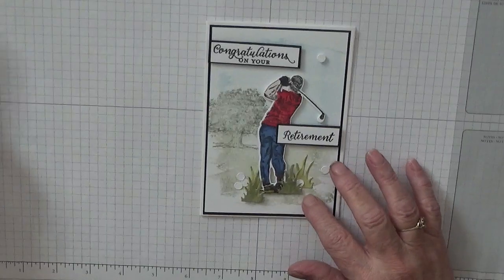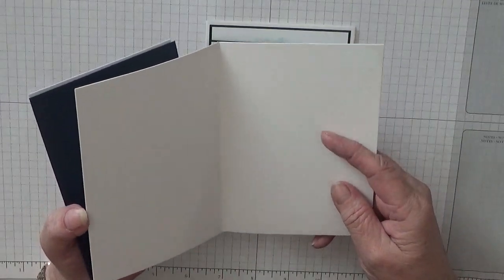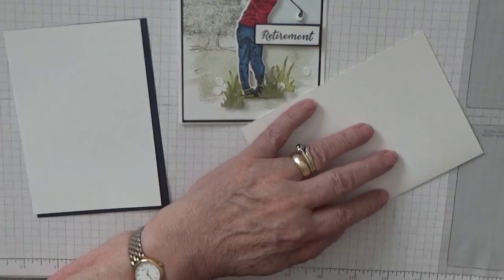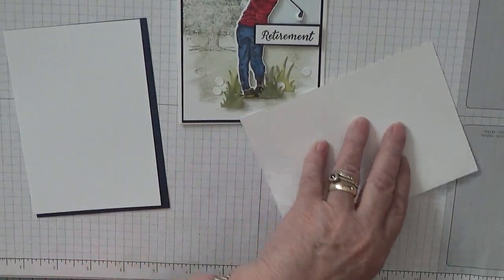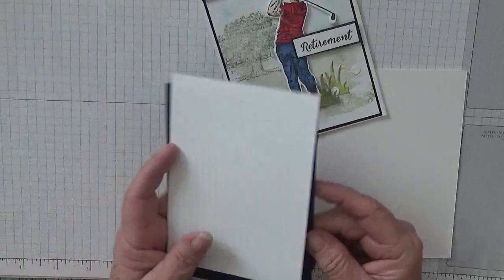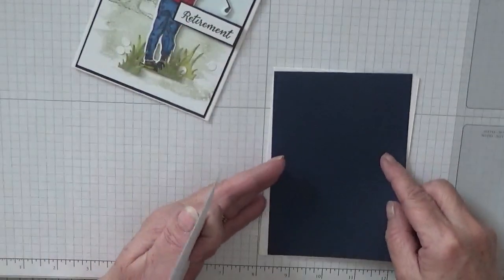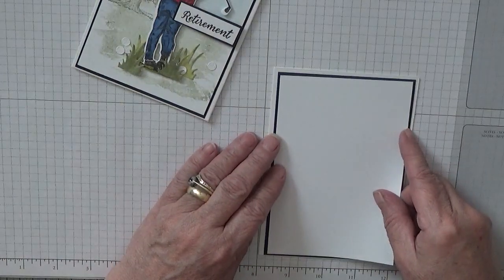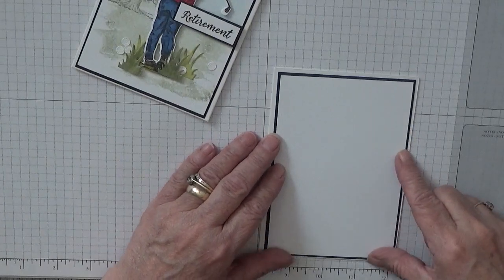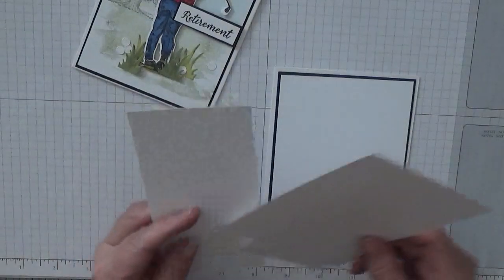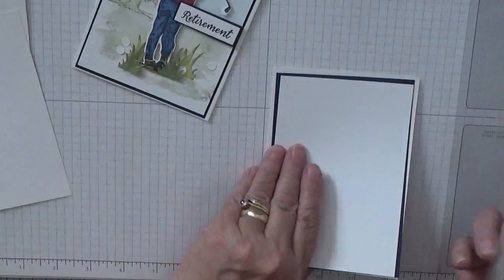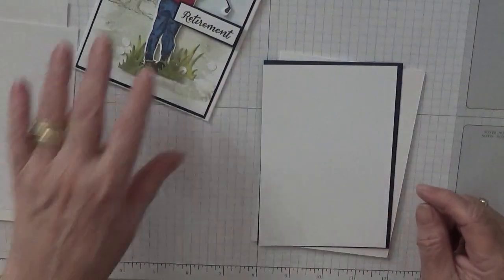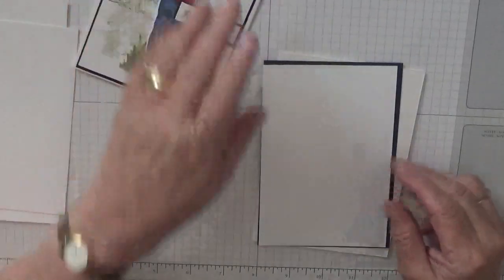For the cardstock I've got a card base of eight and a quarter by five and seven eighths scored at four and one eighths, folded in half. I've got a piece of Night in Navy at five and five eighths by three and seven eighths, and also a piece of white cardstock at five and a half by three and three quarters. I have some scrap, a white piece at five and five eighths by three and seven eighths for the inside, and I have some scraps for the golfer and the sentiments.